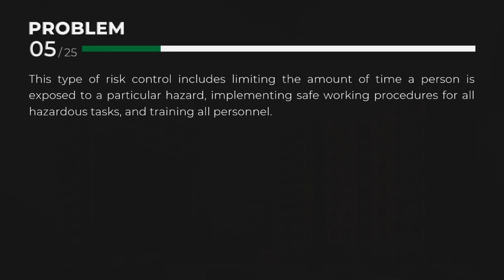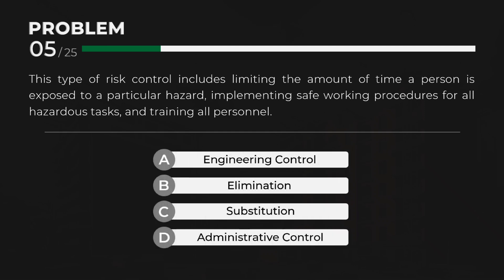This type of risk control includes limiting the amount of time a person is exposed to a particular hazard, implementing safe working procedures for all hazardous tasks, and training all personnel. Answer: D. Administrative control.